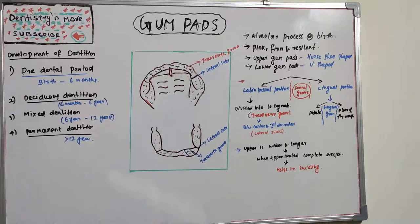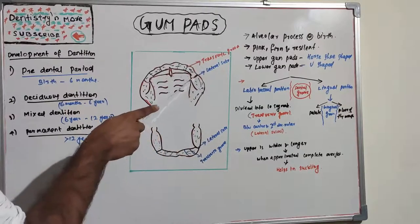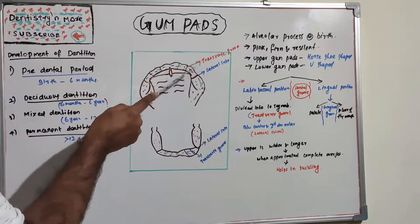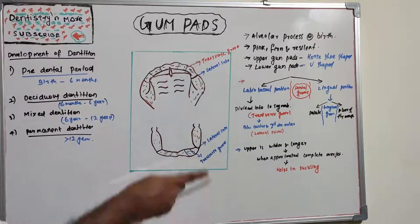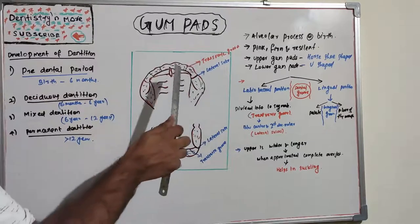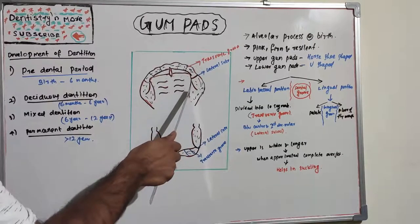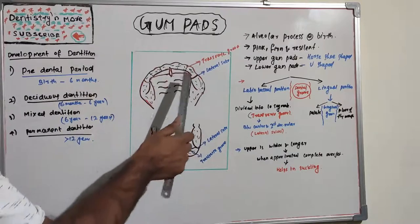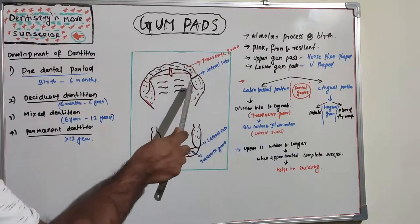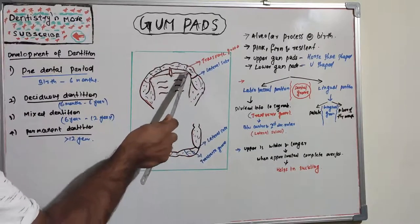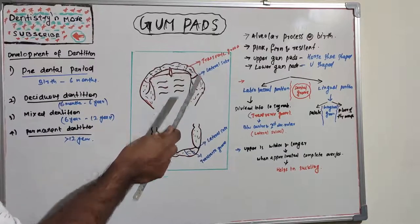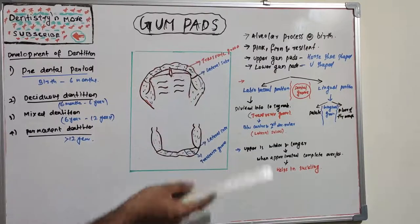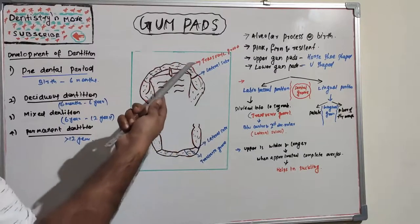The lateral sulcus is the transverse groove present between the canine and the first molar. To summarize: the dental groove separates the labio-buccal and lingual portions; the gingival groove separates the gum pad from the palate or floor of the mouth and is touched by the dental groove at the canine region; and the lateral sulcus is the transverse groove between the canine and first molar.